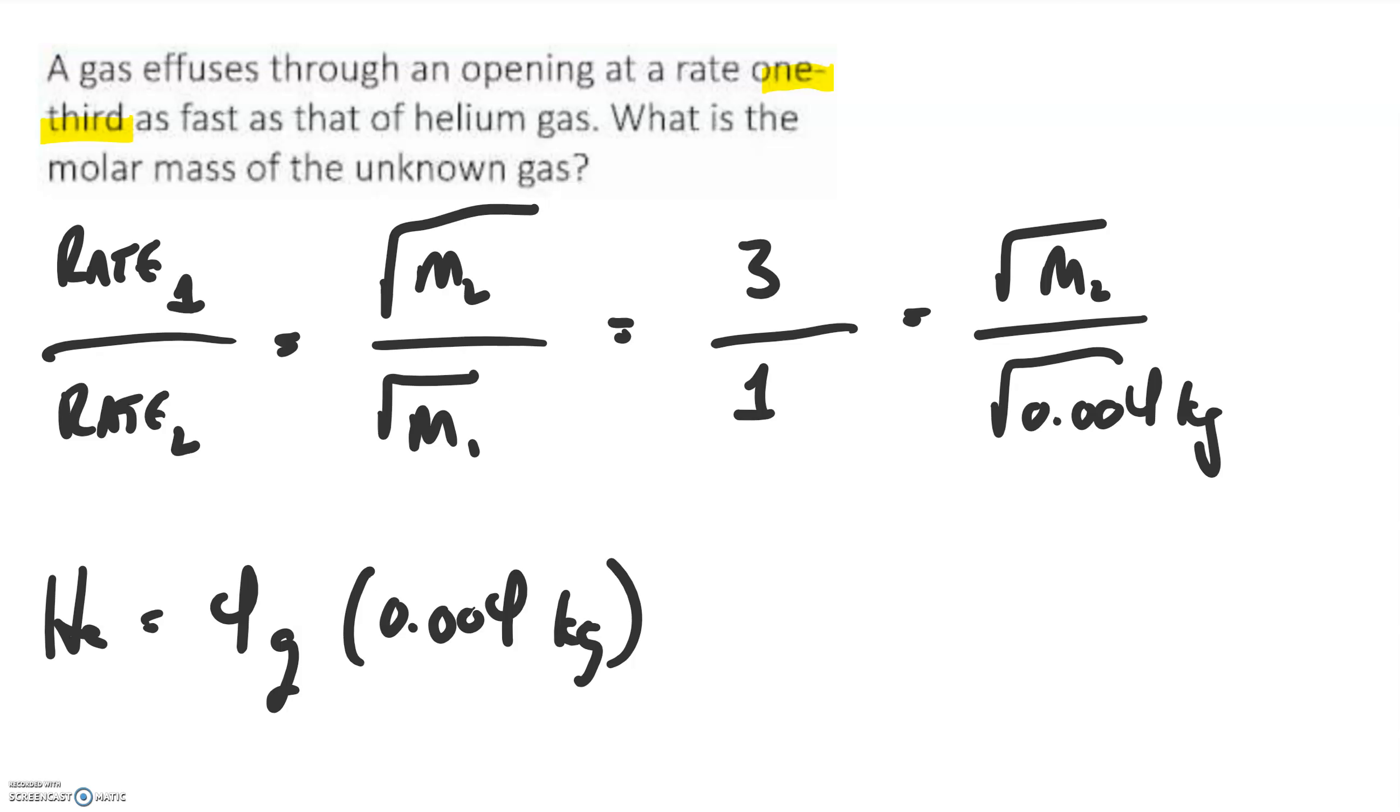So we're going to solve for the mass of gas 2. And so I'm simply going to cross-multiply. And we get 3 times the square root of 0.004 kilograms equals 1 times the square root of the mass of gas 2. So let's bust out our calculator and do some fancy button work.